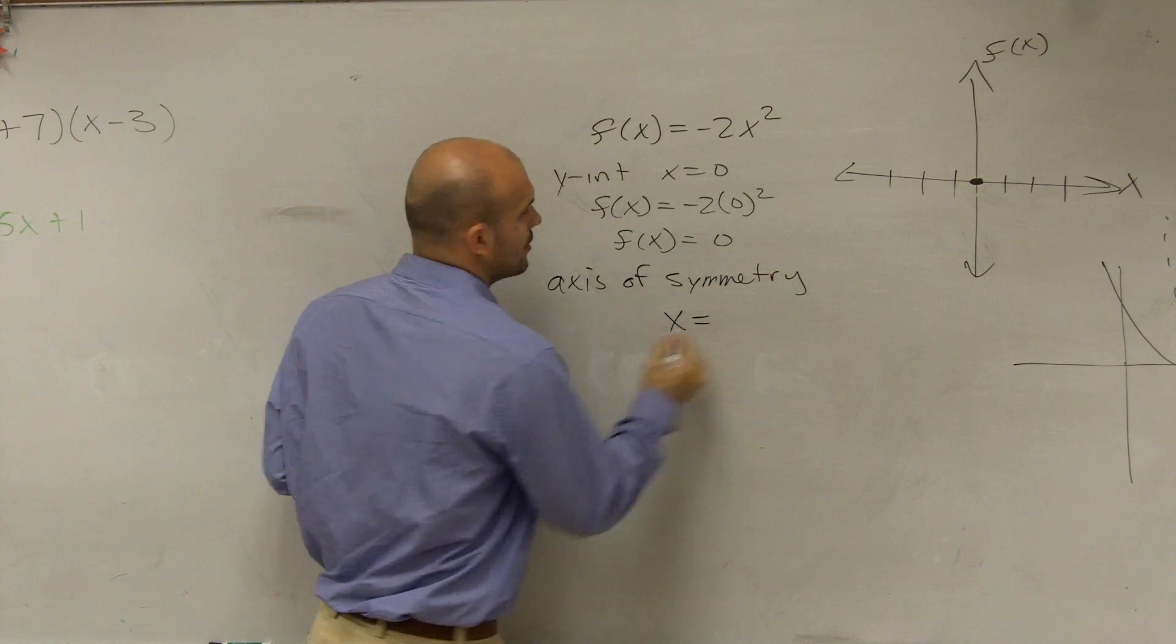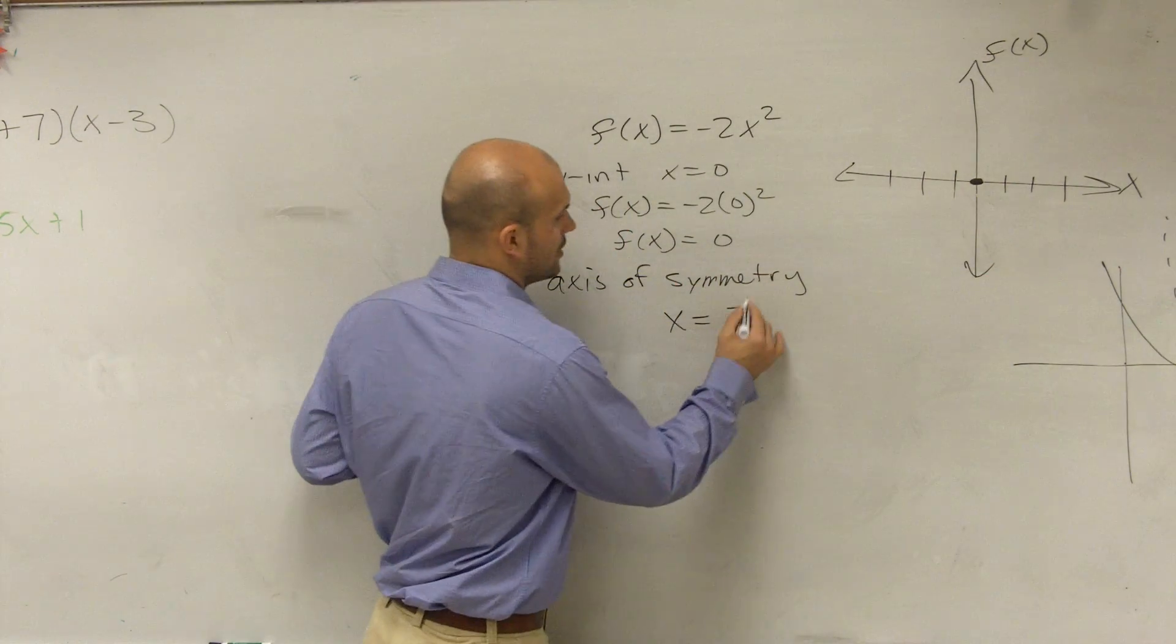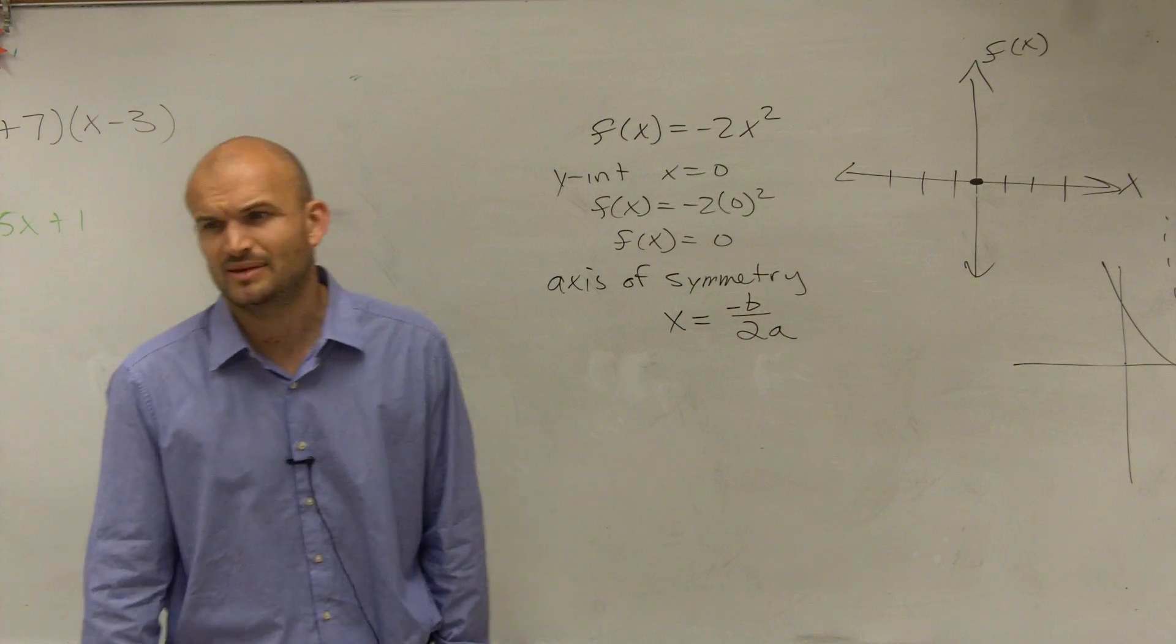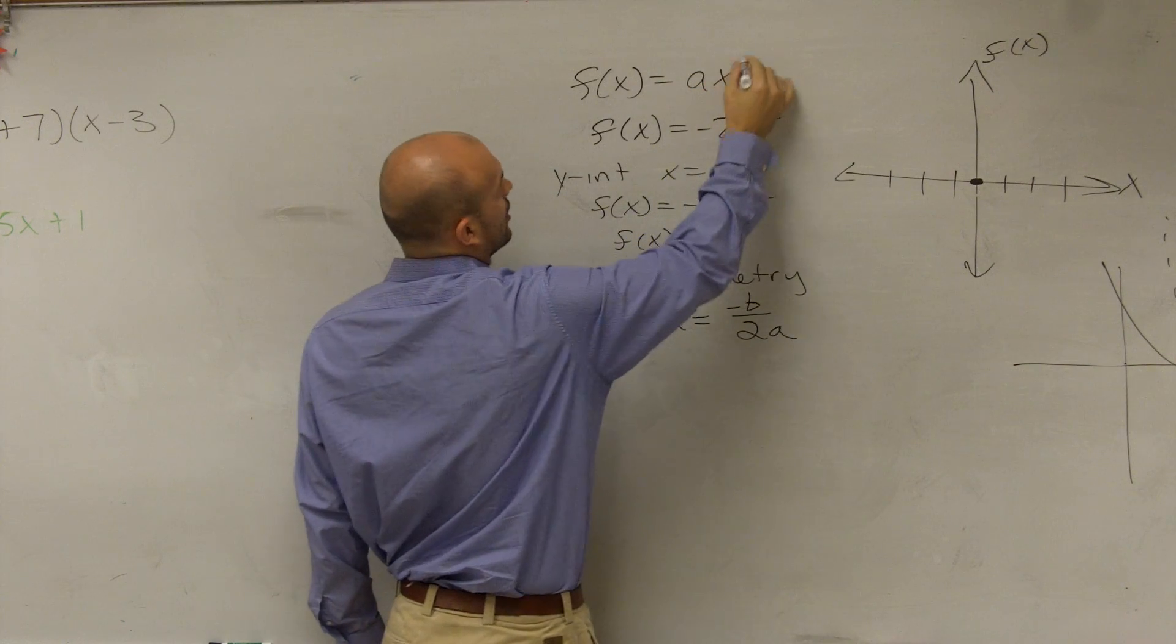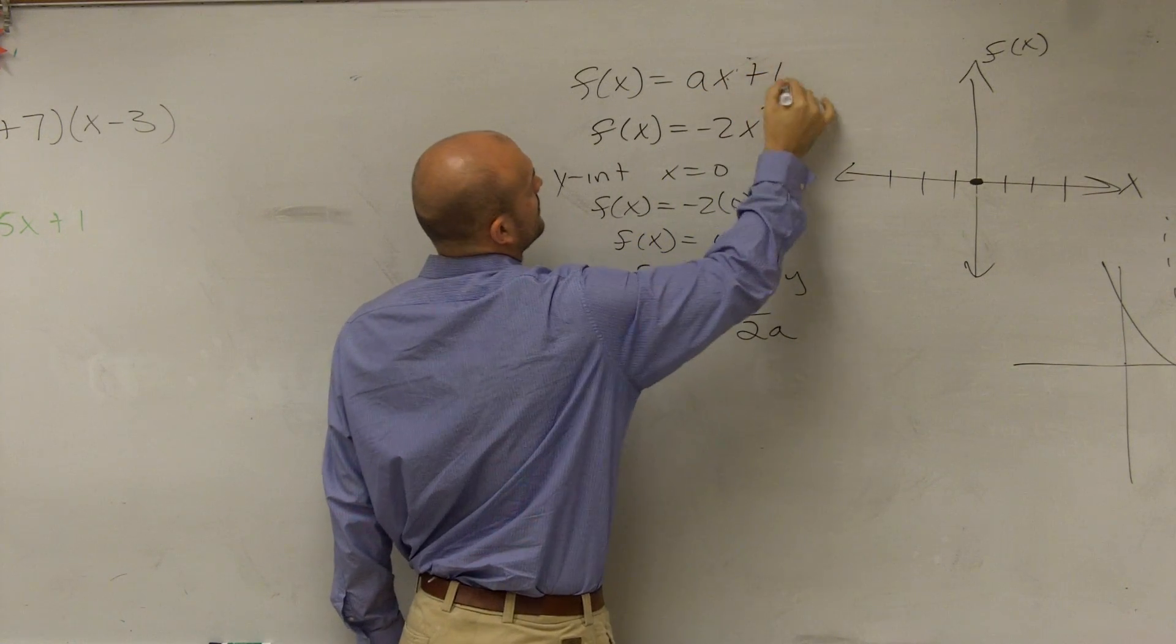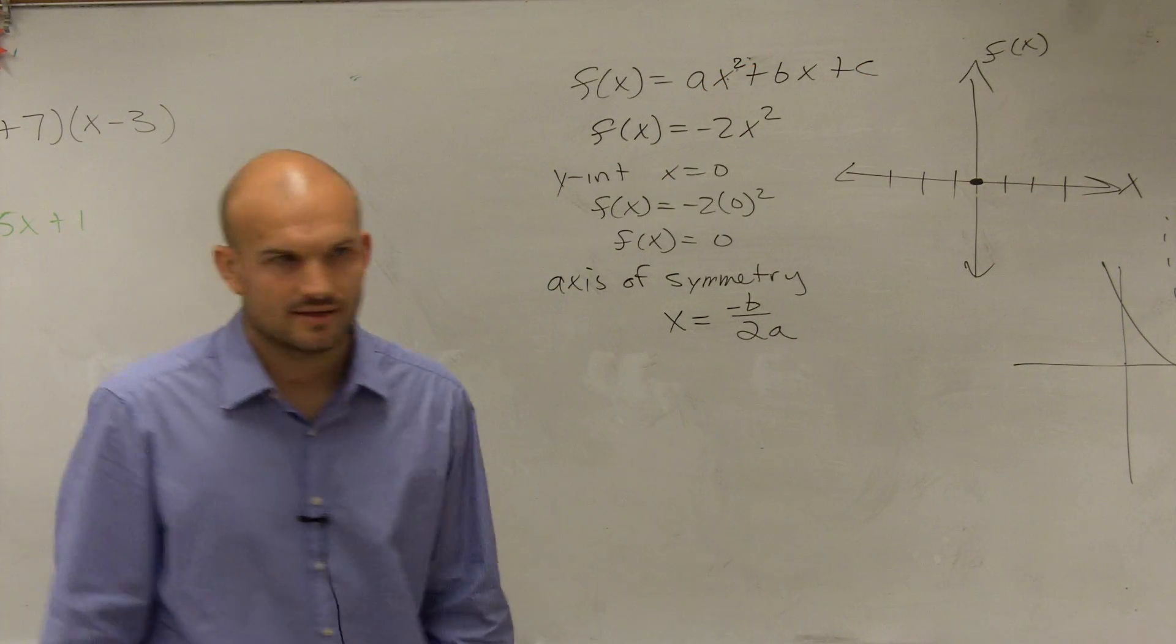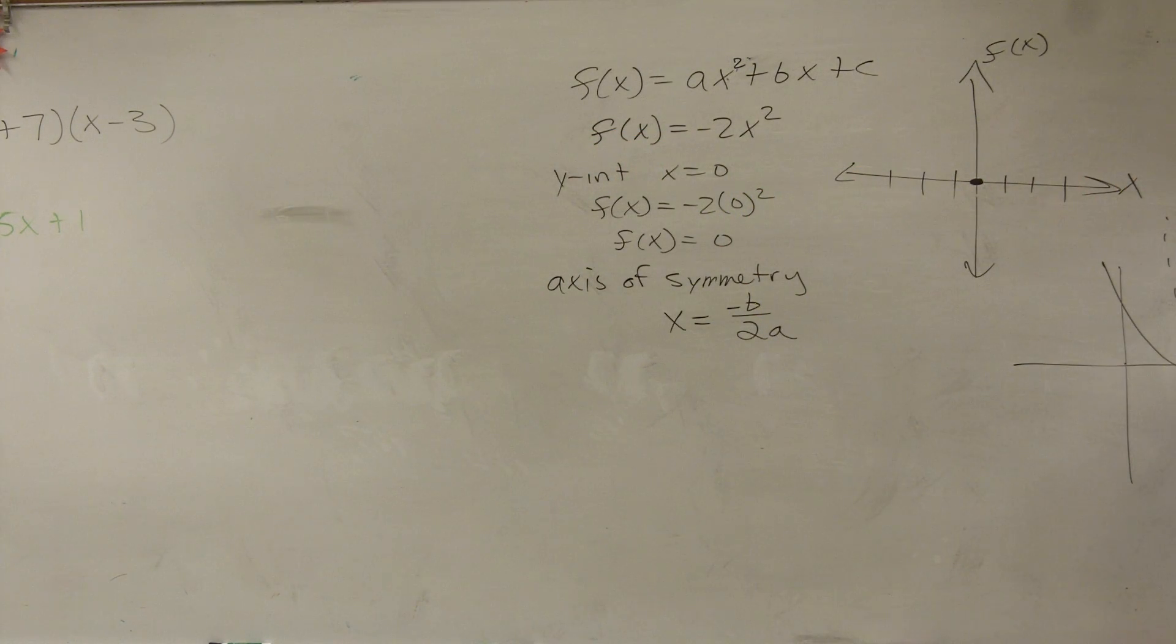Yep. So remember, it's a vertical line. So x = -b/(2a). Now, you might forget, you're like, where does a, b, and c come from? Remember, we talked about quadratic functions all can be written in the form of ax² + bx + c. They can all be written in that format.